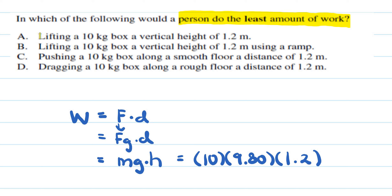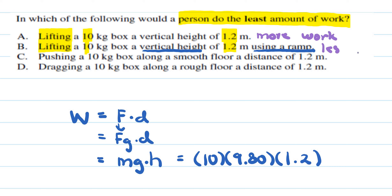For options A and B, we're dealing with lifting where the mass and distance are the same. Reading the problem, option B involves going past a vertical height using a ramp, so option A takes more work and option B requires less work.